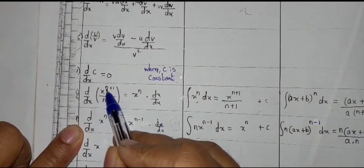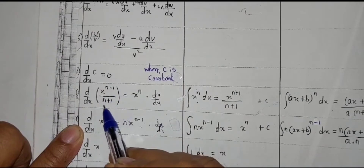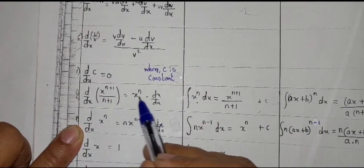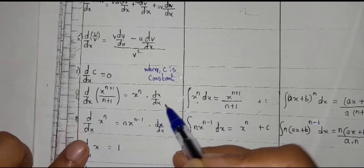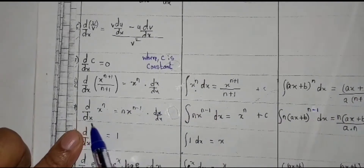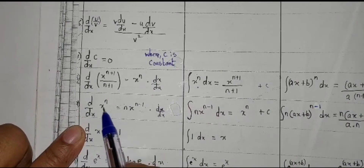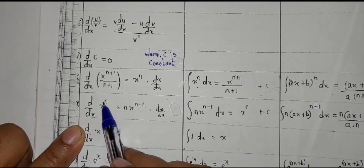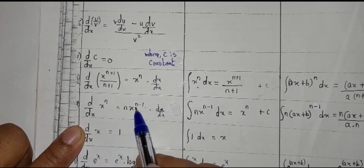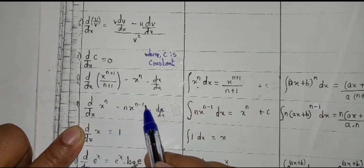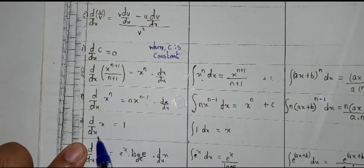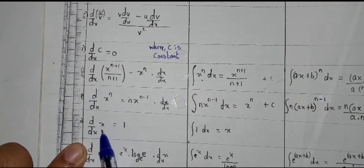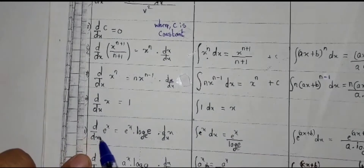Next: d upon dx of x raised to n plus 1 upon n plus 1 is equal to x raised to n, times dx upon dx. And d upon dx of x raised to n is equal to n times x raised to n minus 1. Also, d upon dx of x is equal to 1.